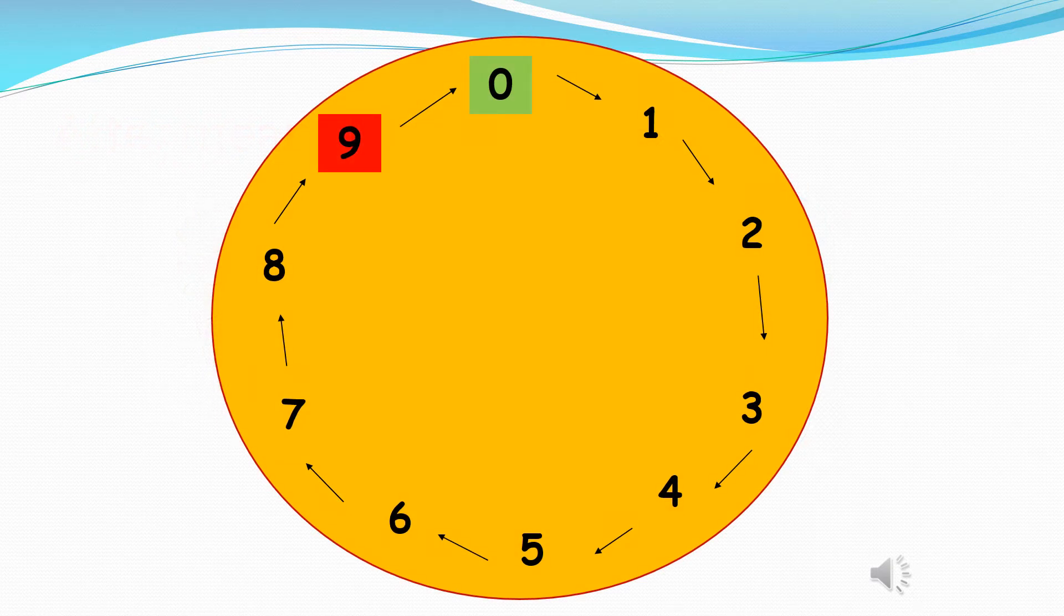Now over here the number 0. Next number, the number which is after 0 is 1 and after 1 is 2 and after 2 is the number 3. And after number 3 is number 4. And after number 4 is number 5.